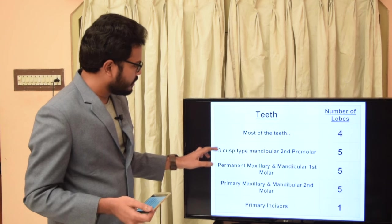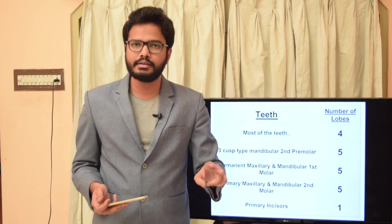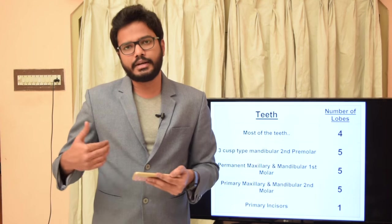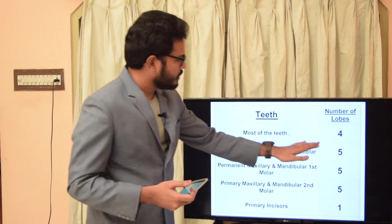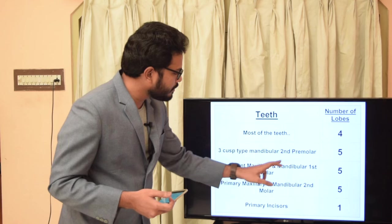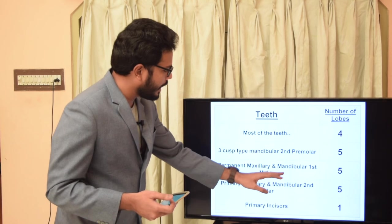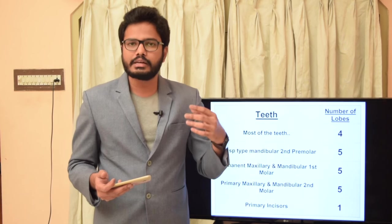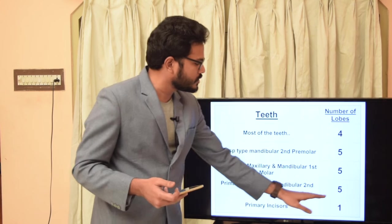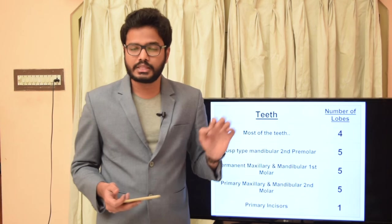There are exceptions: a three-cusp type mandibular second premolar develops from five lobes, having a buccal cusp, mesolingual cusp, and distolingual cusp. Permanent maxillary first molar and permanent mandibular first molar with five cusps also develop from five lobes. Primary maxillary second molar and primary mandibular second molar, which morphologically resemble permanent first molars, also develop from five lobes. Primary incisors develop from a single lobe.